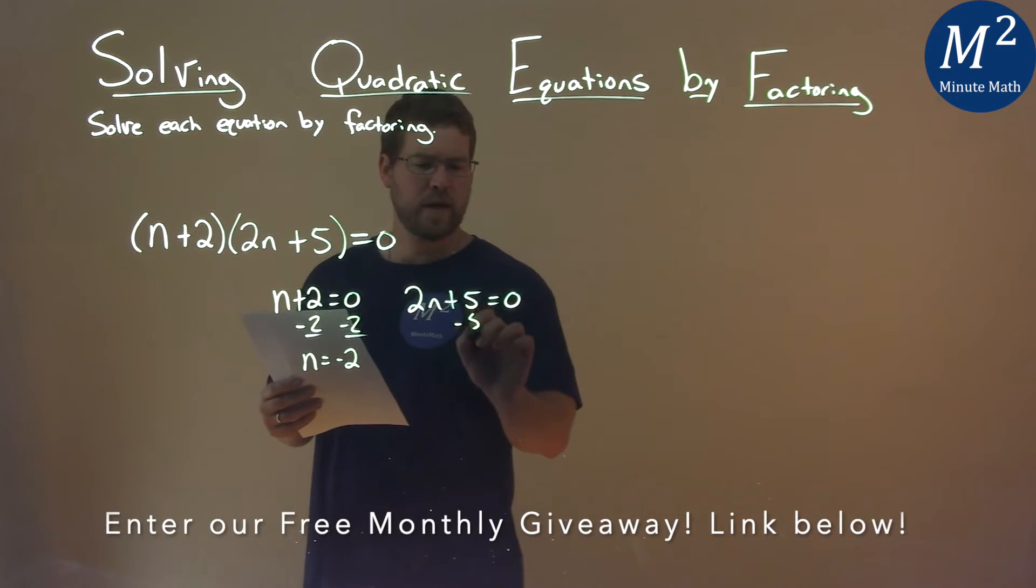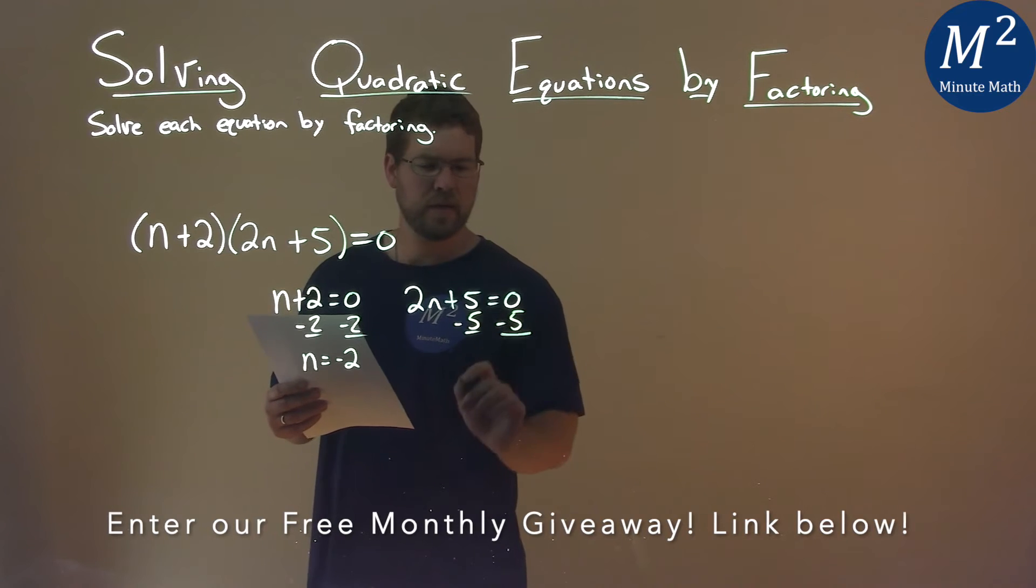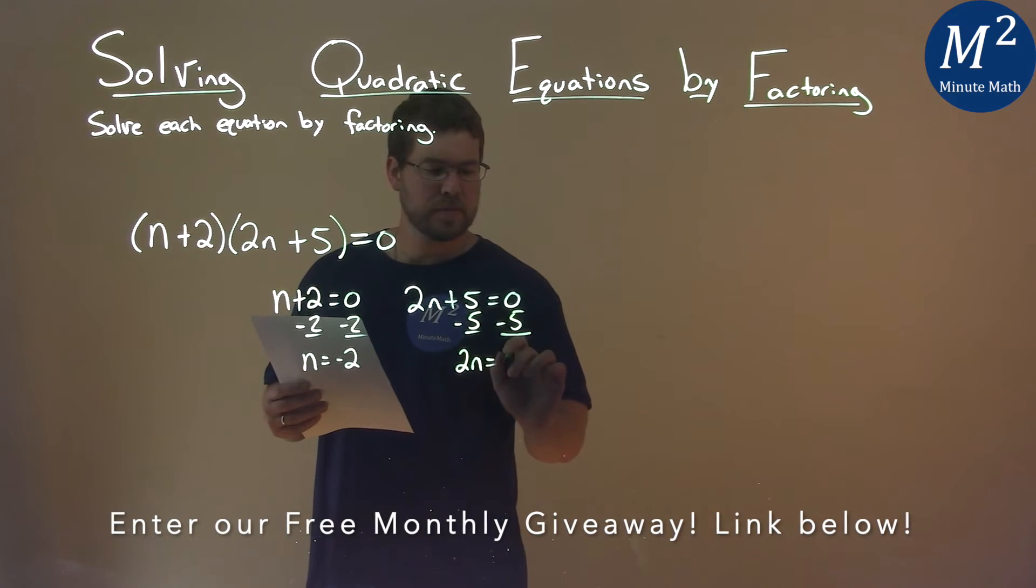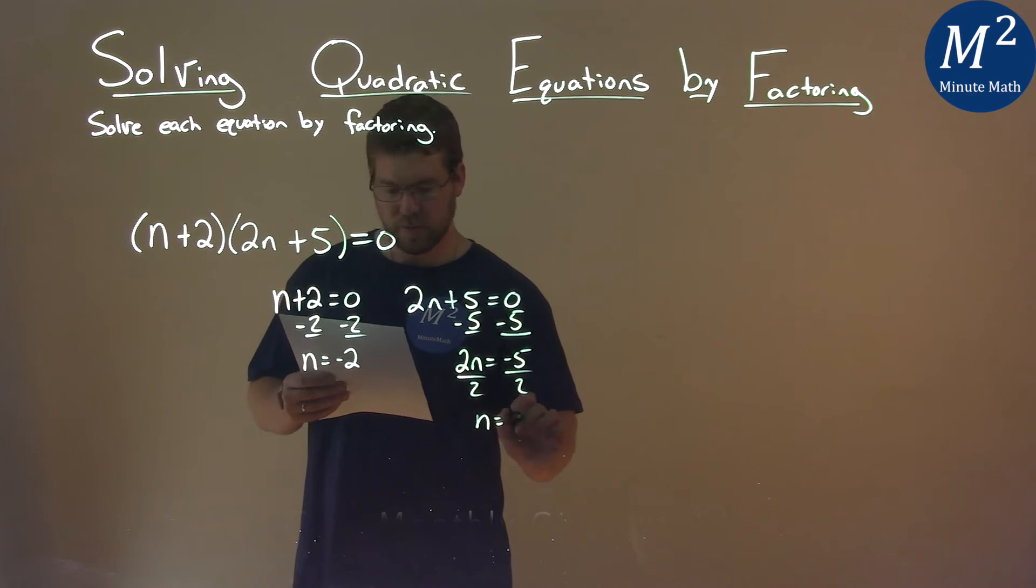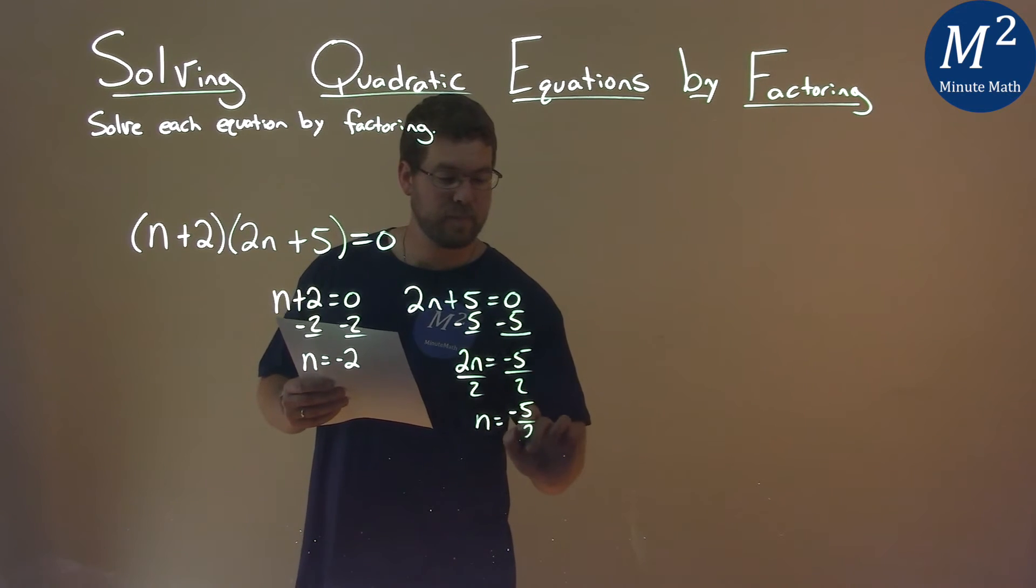Second equation, I subtract 5 first from both sides. I have 2n equals negative 5. Then I divide both sides by 2, and n equals negative 5 halves.